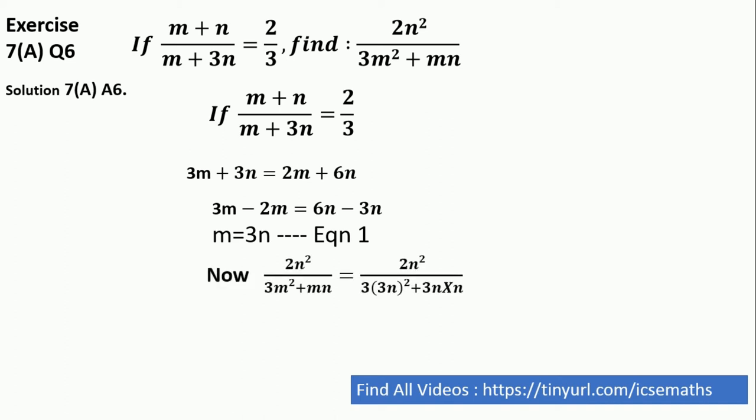Now we have a value of m here. Now simply we just need to find out the 2n square by 3m square plus mn by putting the value of m here.